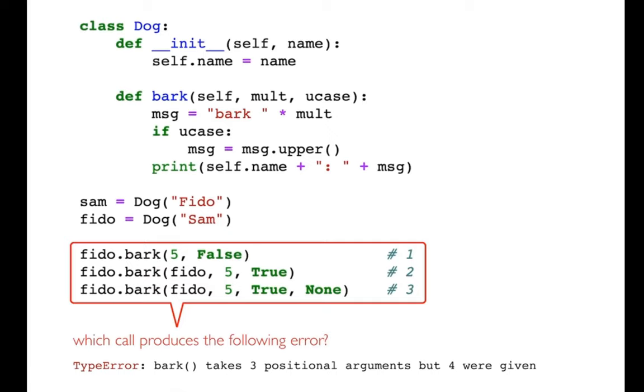So the question is, if I get this type error—three positional arguments but four were given—which of these three was causing that? I'll give you a moment to think about it and then I'll walk you through it.